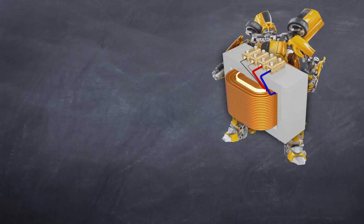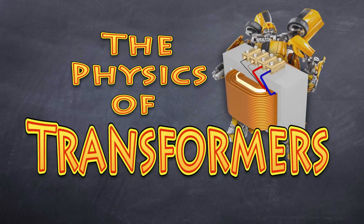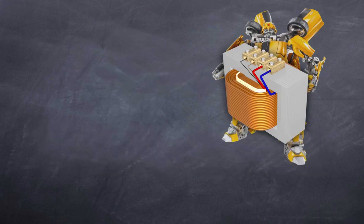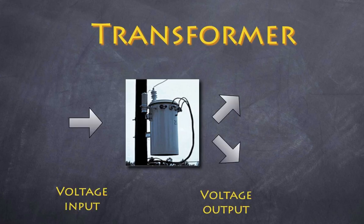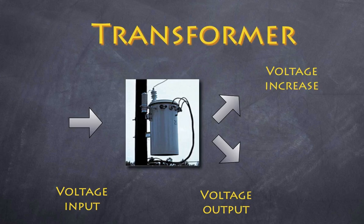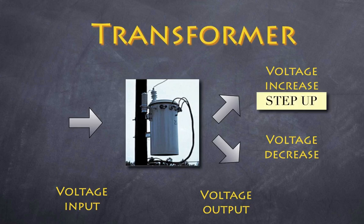Welcome to High School Physics Explained. Today I'm going to talk about transformers — not the Michael Bay movie, but transformers: those objects that change electrical voltage into higher or lower forms. A transformer takes an input voltage and outputs either an increased or decreased voltage. If it increases the voltage, we refer to this as a step-up transformer.